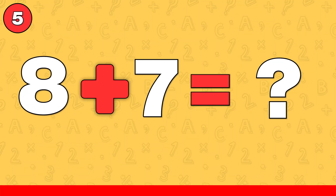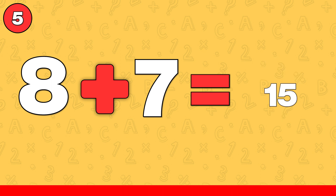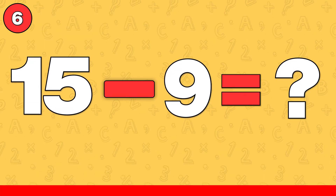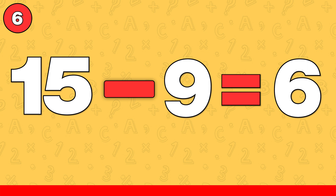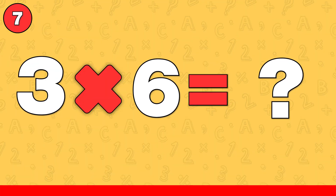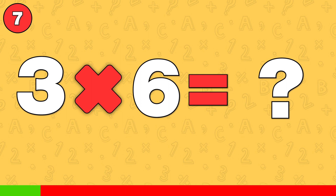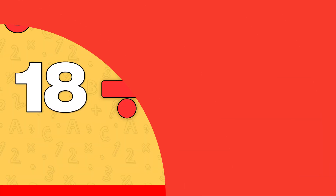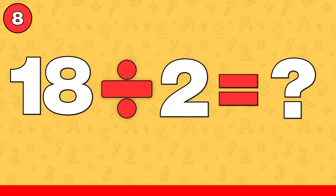8 plus 7. The answer is 15. 15 minus 9. The answer is 6. 3 times 6. The answer is 18. 18 divided by 2. The answer is 9.